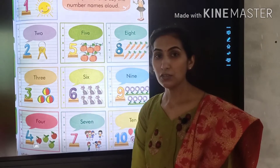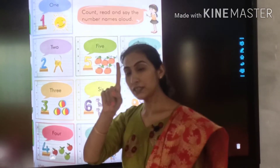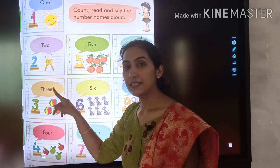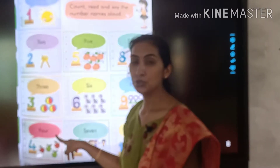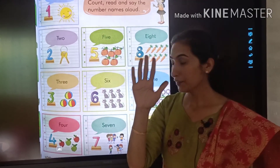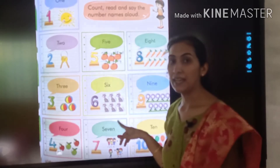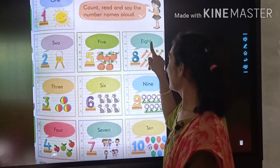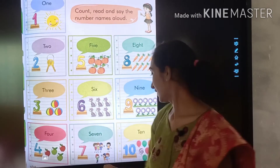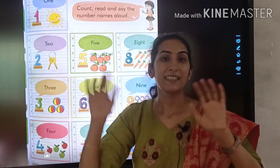Now we will do a revision. O-N-E, 1. T-W-O, 2. T-H-R-E-E, 3. F-O-U-R, 4. F-I-V-E, 5. S-I-X, 6. S-E-V-E-N, 7. E-I-G-H-T, 8. N-I-N-E, 9. And T-E-N, 10. 10 fingers, 10 numbers.